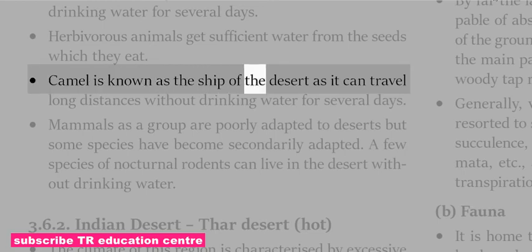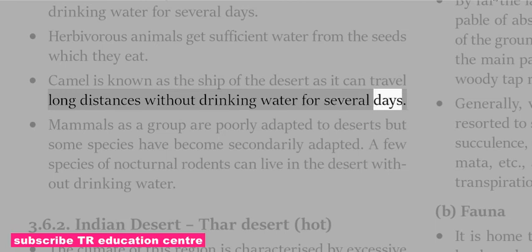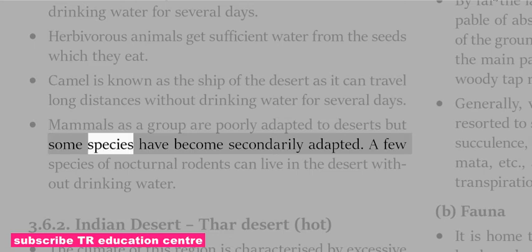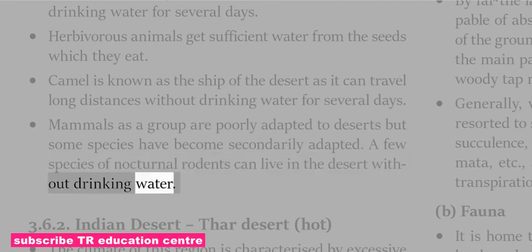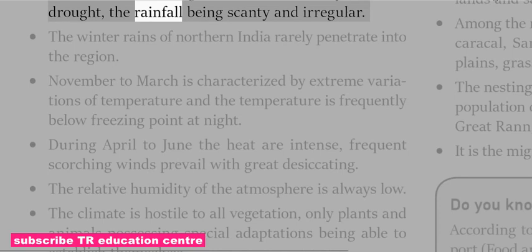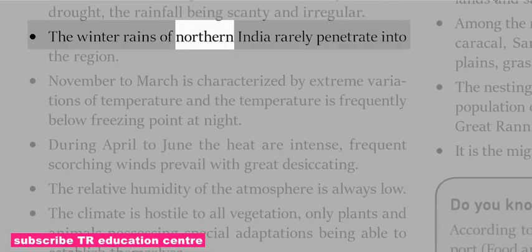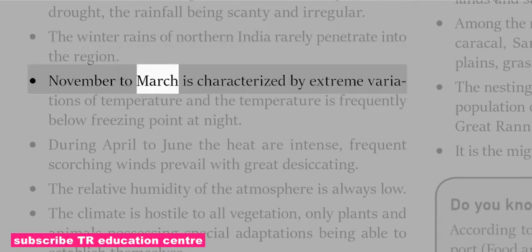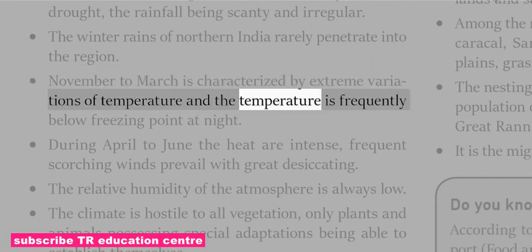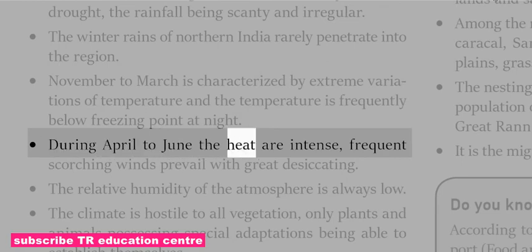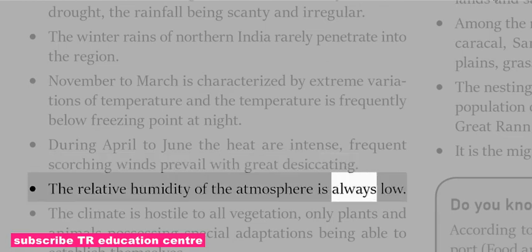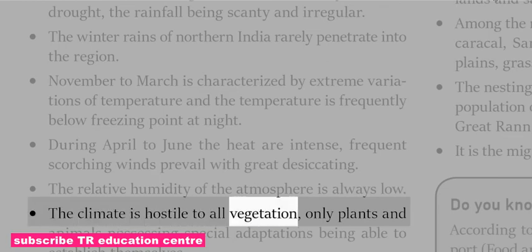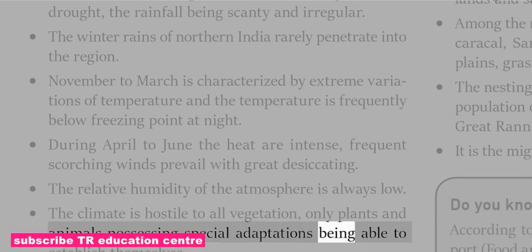Lizards are mostly insectivorous and can live without drinking water for several days. Herbivorous animals get sufficient water from the seeds they eat. Mammals as a group are poorly adapted to deserts, but some species have become secondarily adapted; a few species of nocturnal rodents can live in the desert without drinking water. The climate of the Thar Desert is characterized by excessive drought, with scanty and irregular rainfall. November to March is characterized by extreme temperature variations, frequently below freezing at night. During April to June, heat is intense with frequent scorching winds. Relative humidity is always low.